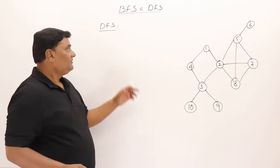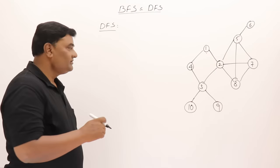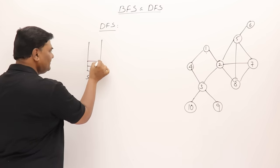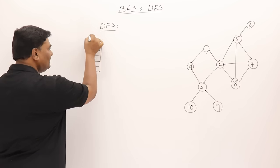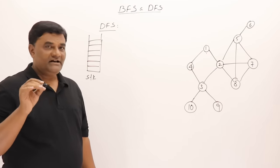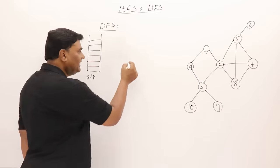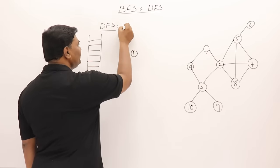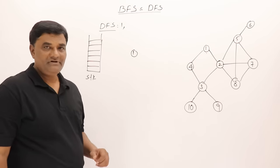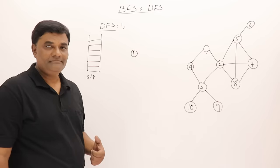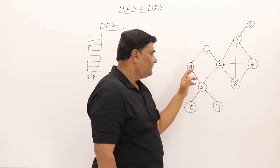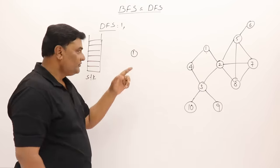Next is depth first search. For this I will use a stack as the data structure. I can start the traversal from any vertex. I'll start from vertex 1 — this is the initial step. The repeating step: as a new vertex is visited, start exploring it. Adjacent to 1 are 4 and 2. Visit 4.